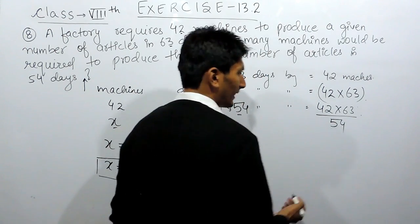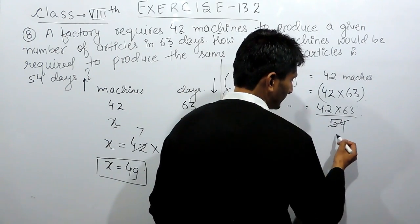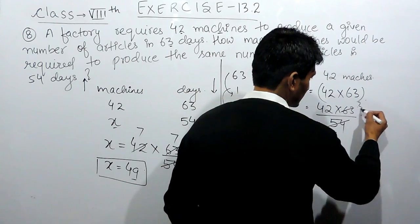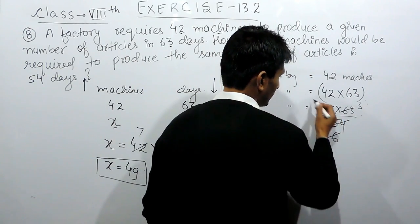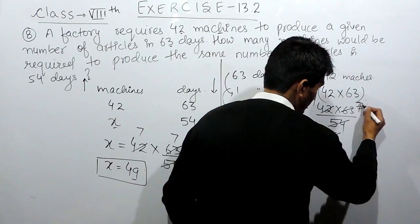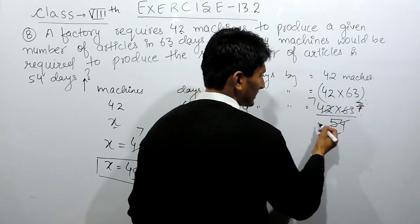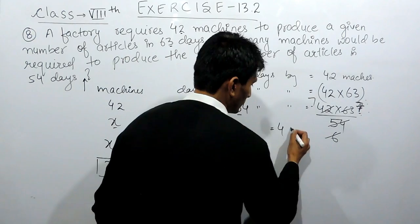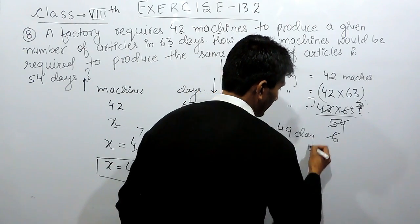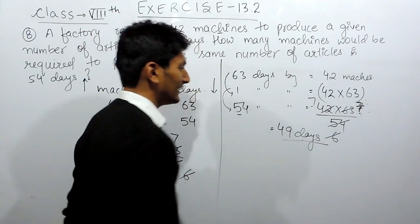So again, I can cancel this by 9. This is 6 times, this is 7 times. And this is 7, this is 7 times. And this is cancelled 7 times. So 7 into 7 is 49. So again, the same answer will come out, which is 49 machines. So this is how we can solve this question.